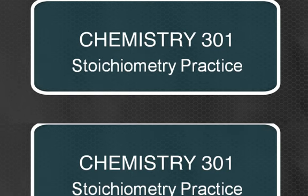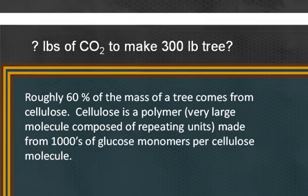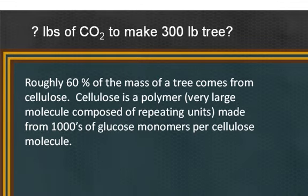If given the information that roughly 60% of the mass of a tree comes from cellulose, you can think a little bit harder and understand that cellulose is a polymer — a very large molecule composed of repeating units made from thousands of glucose monomers per cellulose molecule. So where does most of the mass of the tree come from? Most of the mass of the tree comes from cellulose, and cellulose is made from glucose.